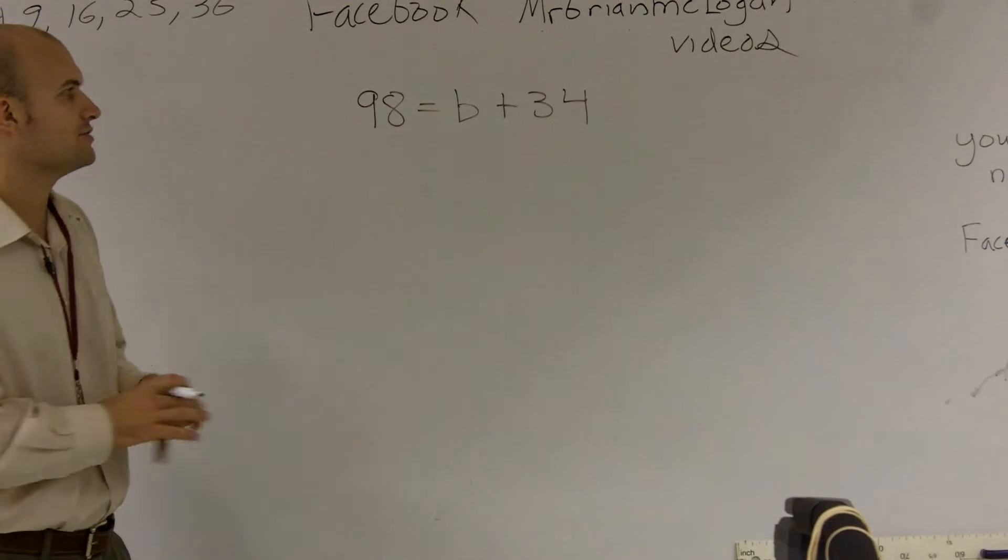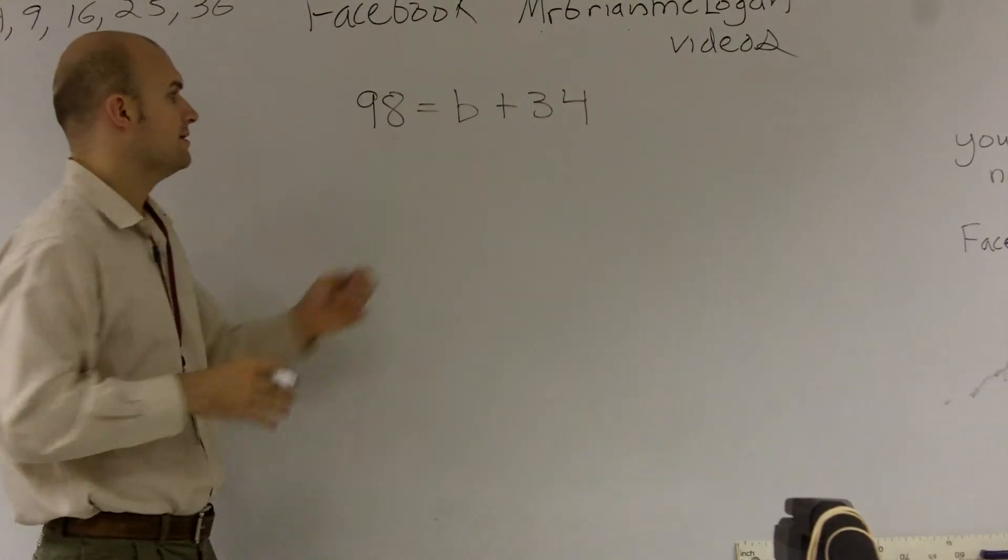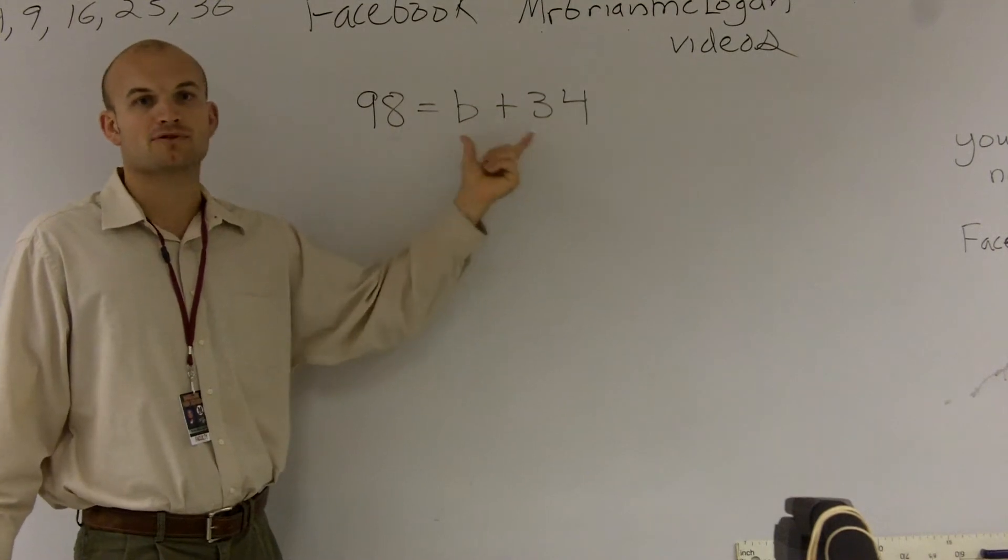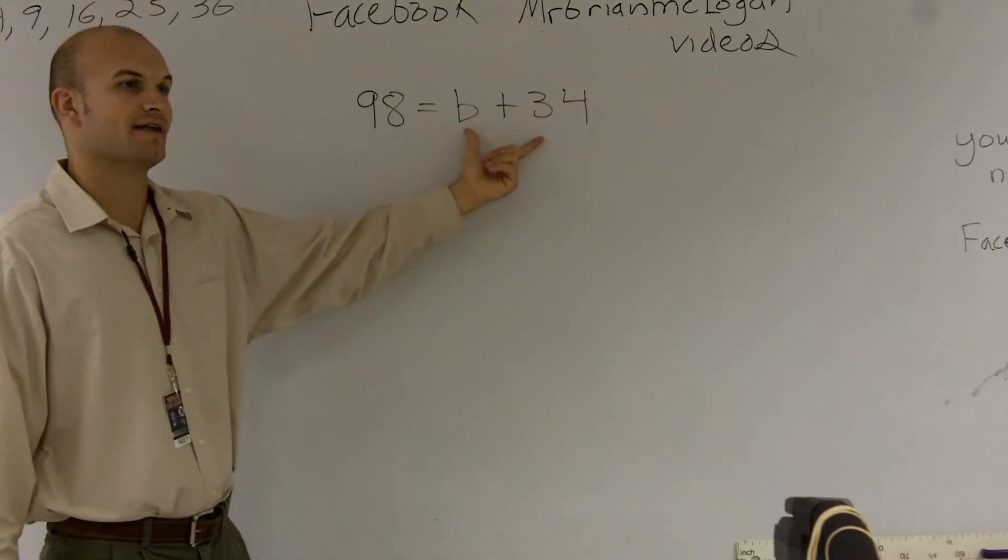So one thing we can do is we want to solve for this b, meaning we want to get the b by itself. We don't want any other numbers or variables on its side, on the right side of this equation.